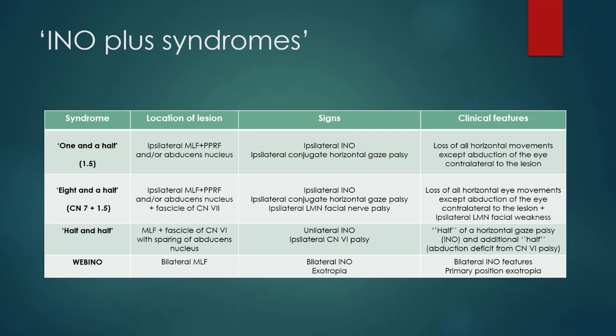Patients can have something called eight-and-a-half syndrome. This is a combination of one-and-a-half syndrome plus a lesion involving the fascicle of the seventh cranial nerve, resulting in an ipsilateral lower motor neuron facial nerve palsy.